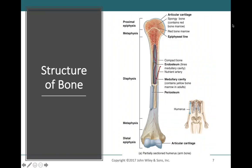Let's look at the humerus, found in the upper arm, to understand the different parts of a long bone — these structures can be applied to all long bones. The long center shaft is the diaphysis, the skinnier portion in the middle connecting the two enlarged ends. The two enlarged ends are known as epiphyses. With every long bone, we have a proximal epiphysis, which is more proximal, and a distal epiphysis, which is more distal and found further down the arm.